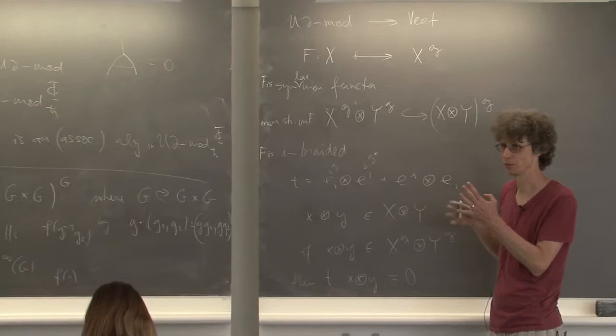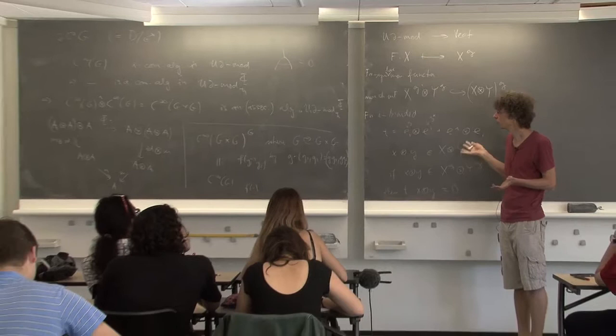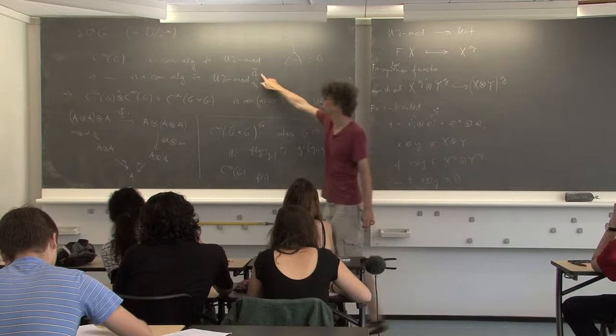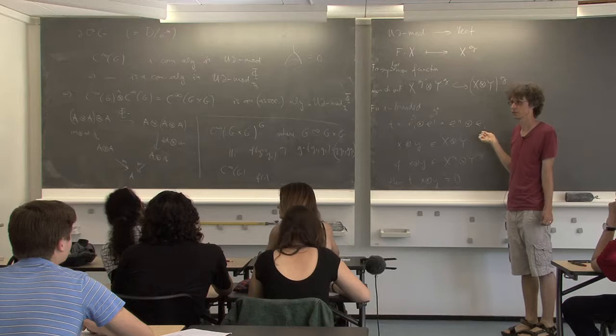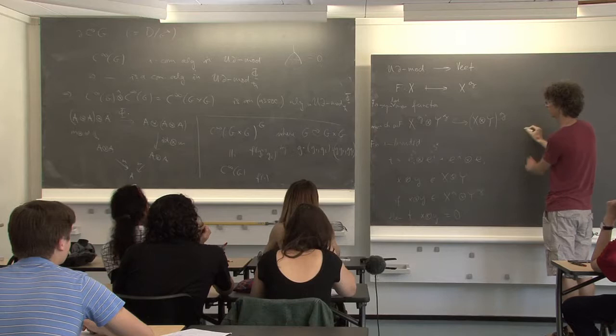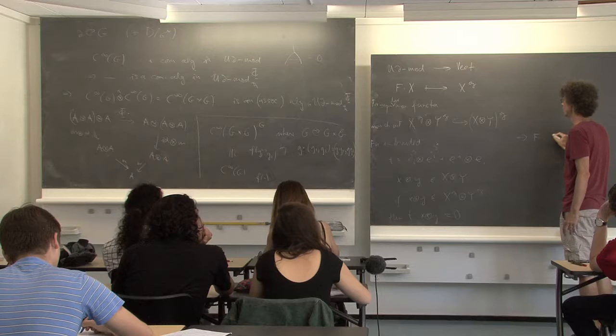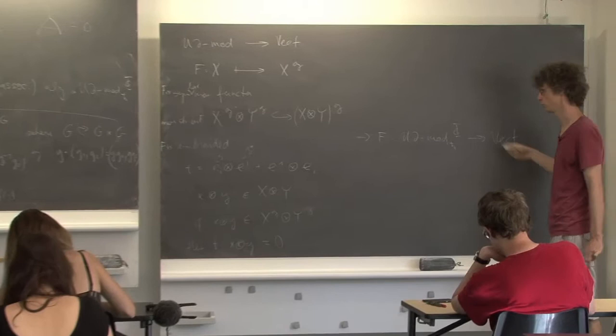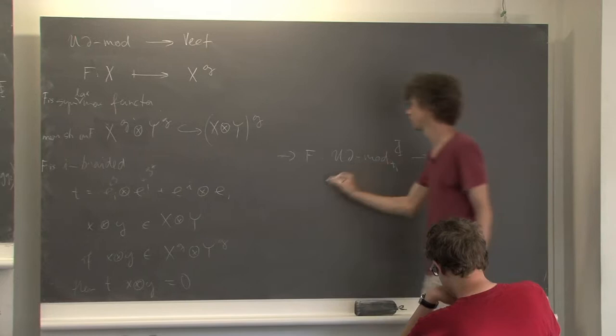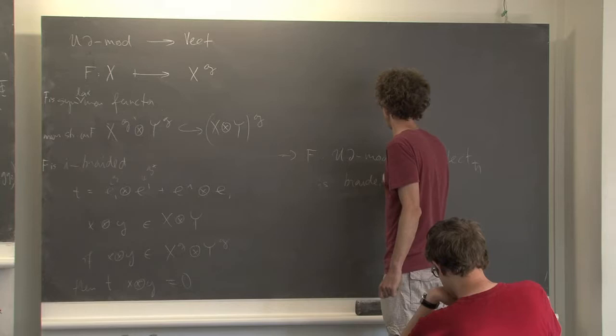So this guy is somehow I-braided — it's not just symmetric but also compatible with this first-order deformation of the braiding — which implies that when you pass to the corresponding Drinfeld double categories with the associator under those H-bars, the same F with the same monoidal structure just stays braided. This implies F from UD-mod H-bar phi to Vect H-bar is braided monoidal with this monoidal structure.